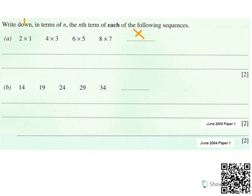We still have a first term, a second term, a third term, and a fourth term. Now we've got to find a rule which will change this number to this number, this one to this one, and this one to this one. We also need to find a rule which will change this one to this one, this one to this one, and this one to this one.